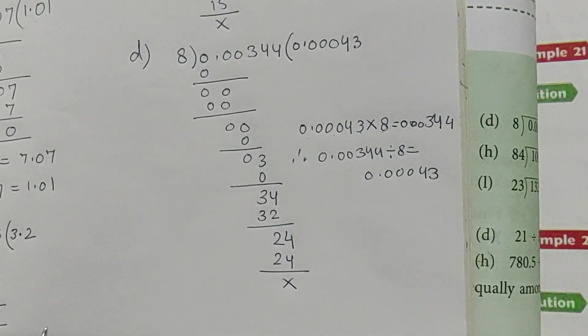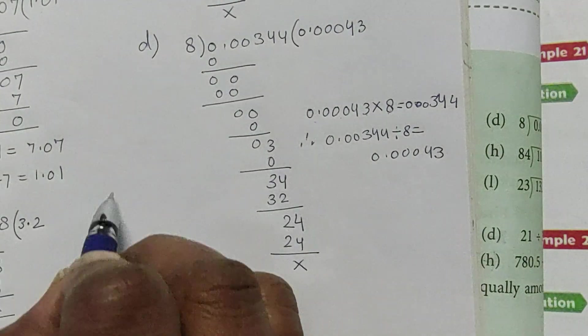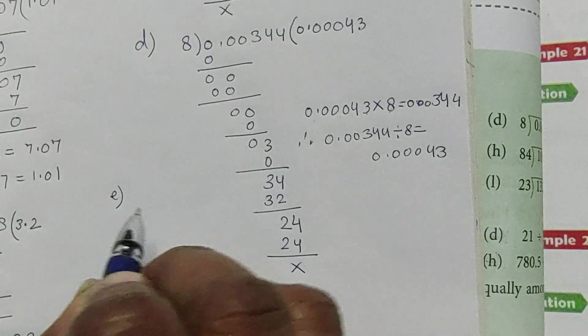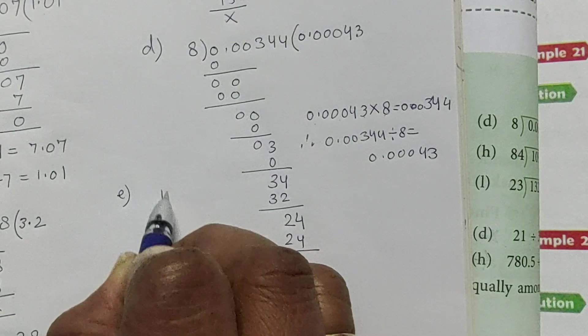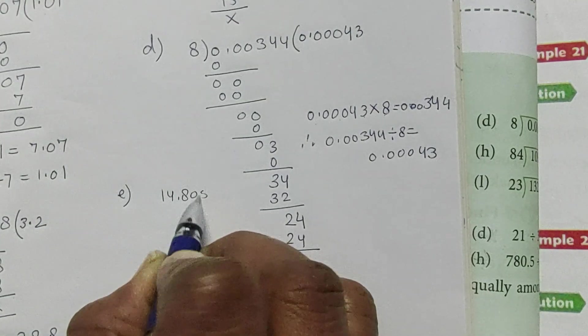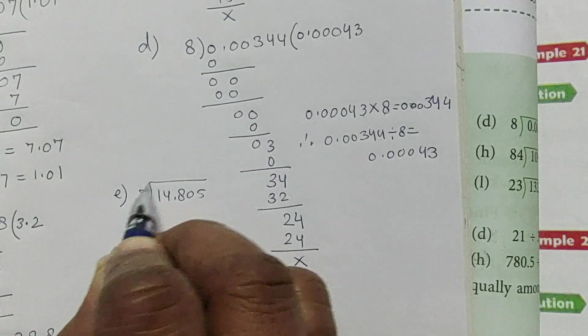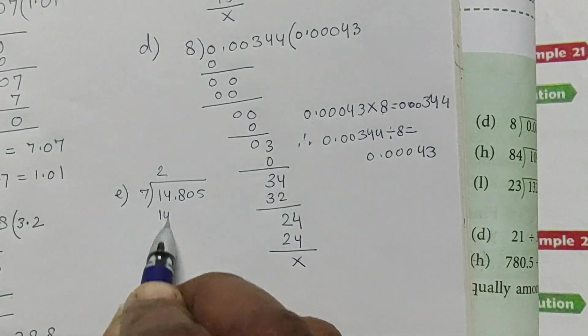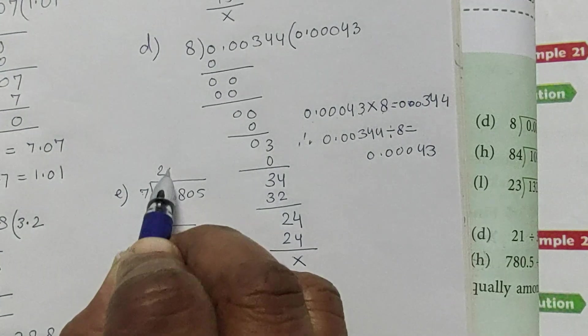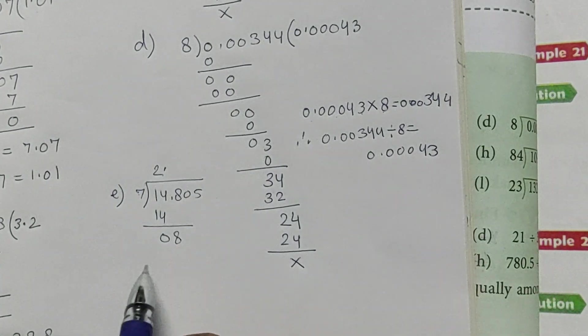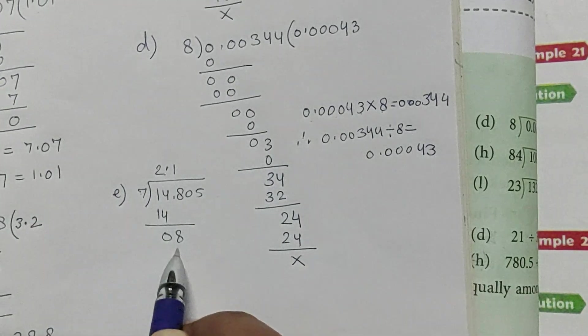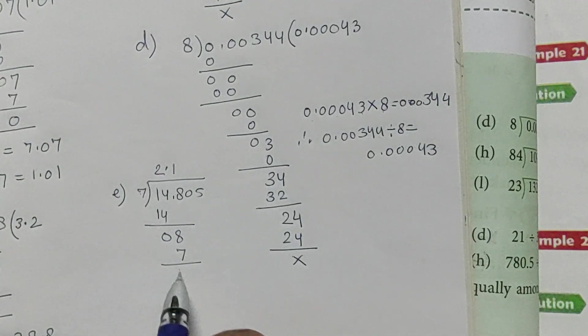Therefore, 0.00344 divided by 8 is equal to 0.00043. Now part E.